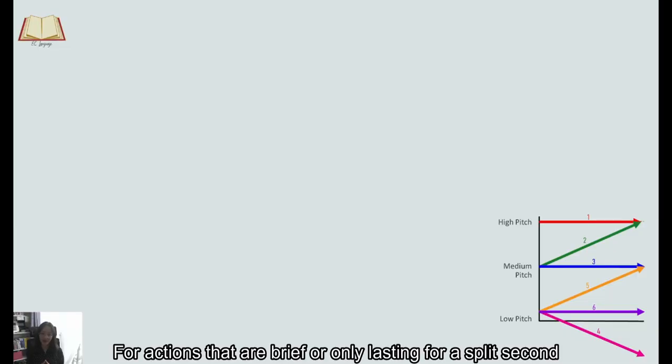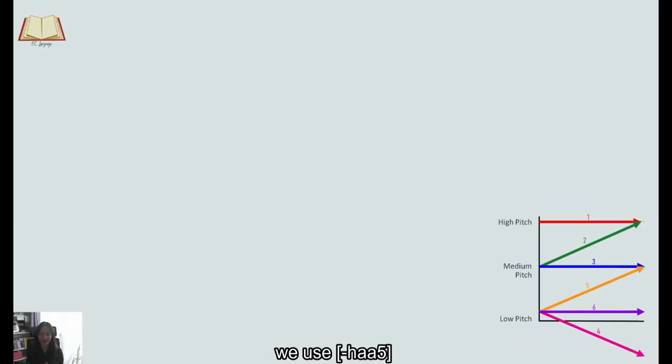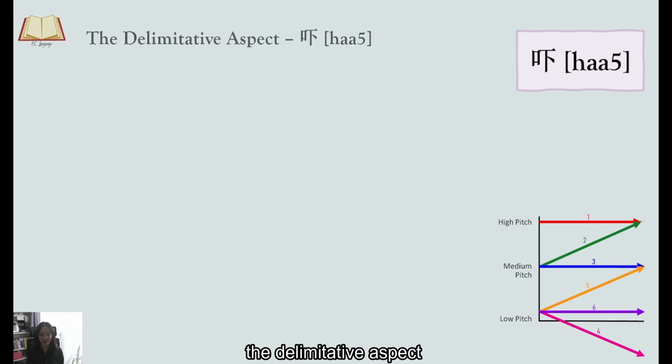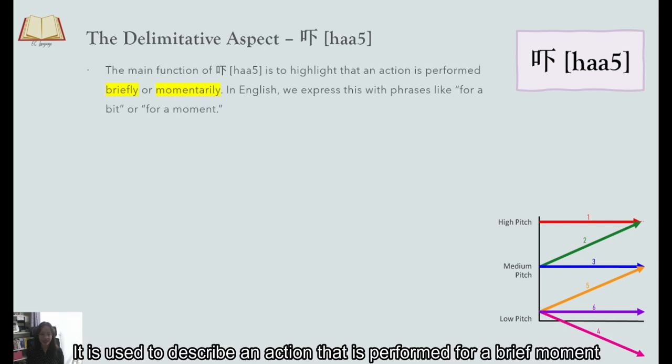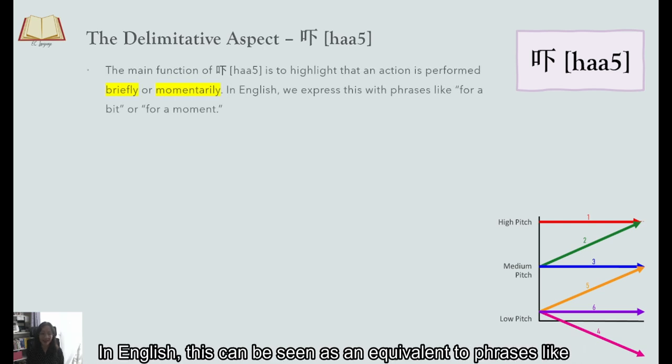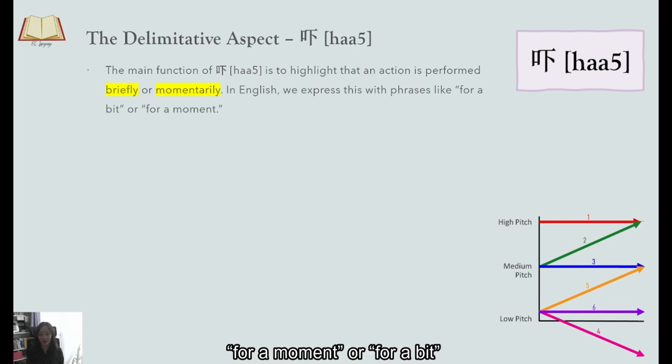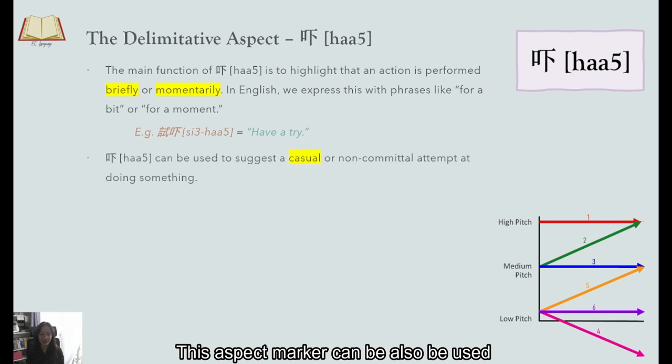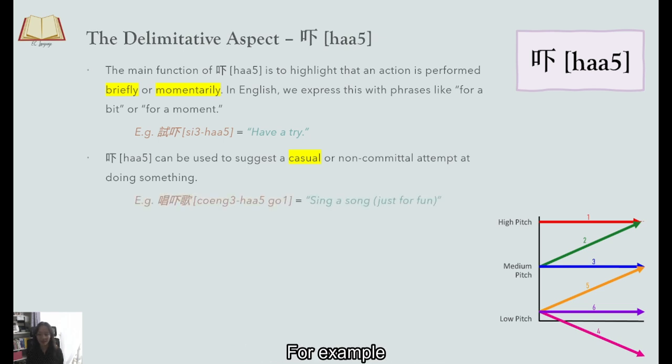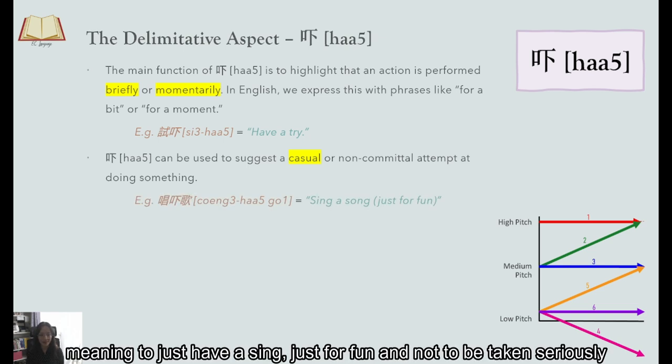For actions that are brief for only lasting for a split second We use 吓 The delimitative aspect It is used to describe an action that is performed for a brief moment In English this can be seen as an equivalent to phrases like for a moment or for a bit For example 試吓 Have a try or try for a bit This aspect marker can also be used for an action that is to be performed casually Kind of like just do it for fun No need to take it seriously For example 唱吓歌 meaning to just have a sing just for fun and not to be taken seriously